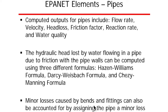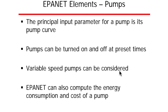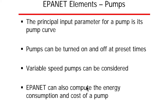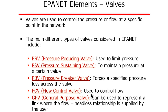The hydraulic head loss due to friction can be computed using the Hazen-Williams formula, the Darcy-Weisbach formula, or the Chezy-Manning formula, depending on the parameter targeted. Minor losses caused by bends and fittings can be accounted for by assigning the pipe a minor loss coefficient. For pumps, the principal input parameter is the pump curve. Pumps can be turned on and off at preset times during simulations, variable speed pumps can be considered, and EPANET can compute the energy consumption and cost of a pump.